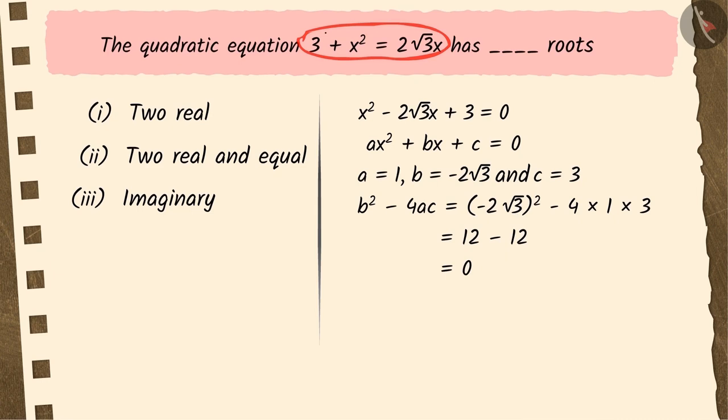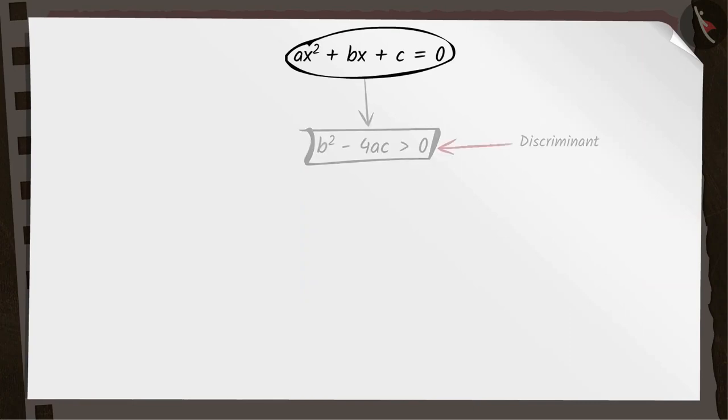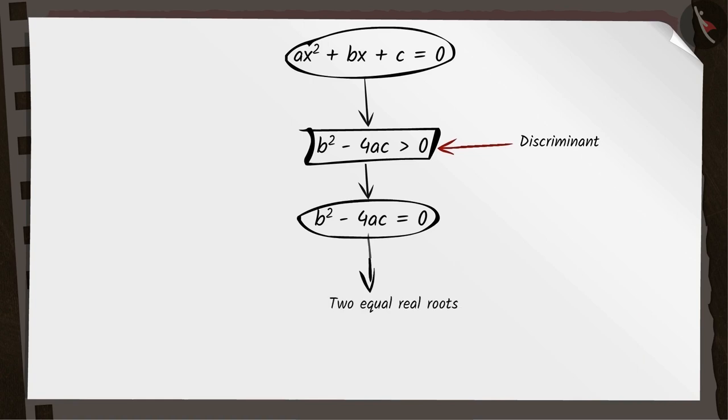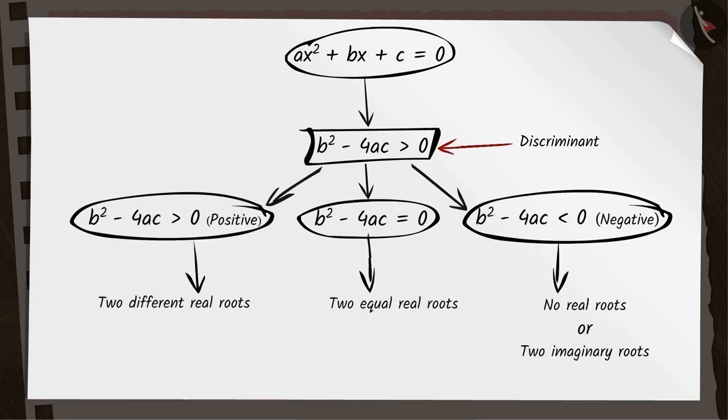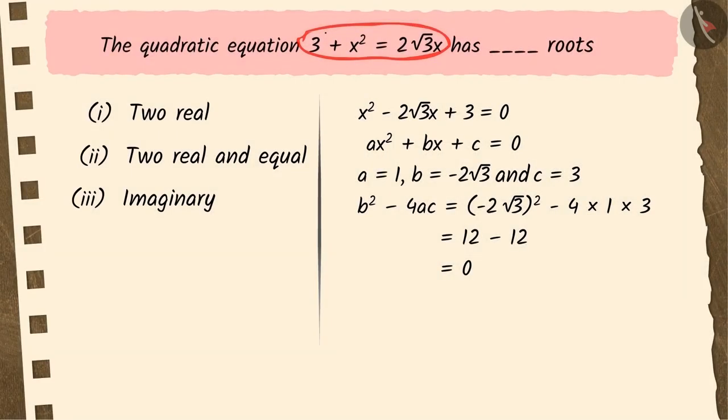We know that if the value of the discriminant of a quadratic equation is 0, then that equation has two equal real roots. Hence, Rekha's answer, that is option 2, is the correct answer.